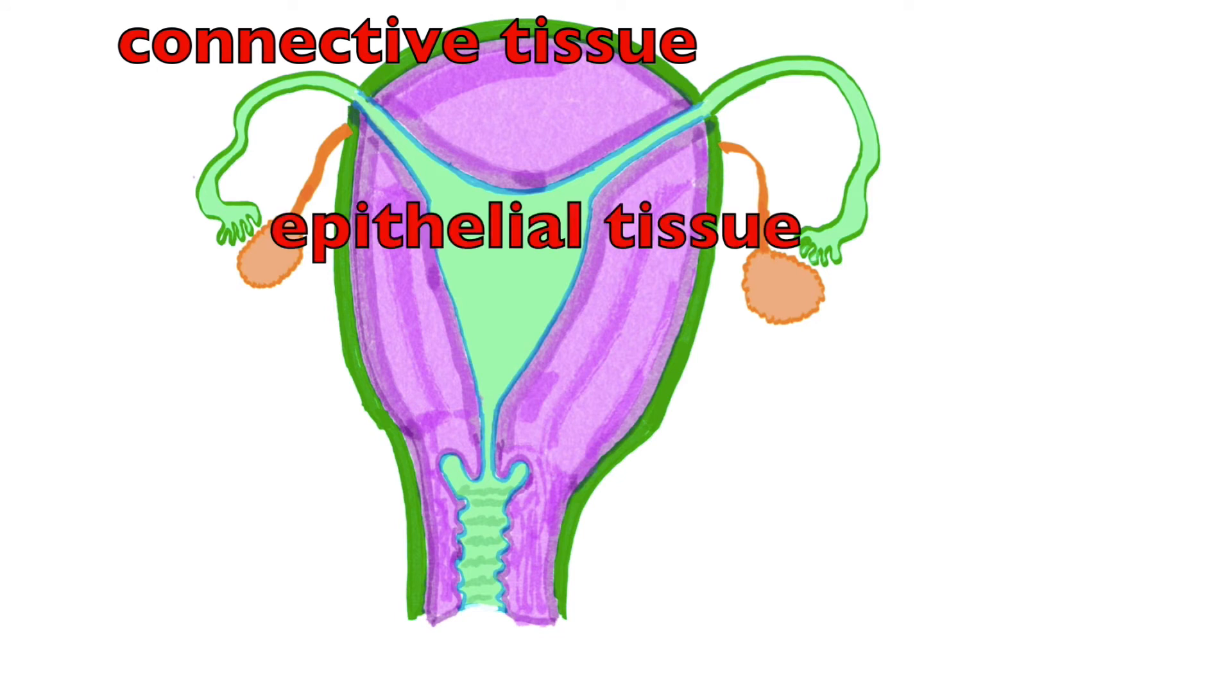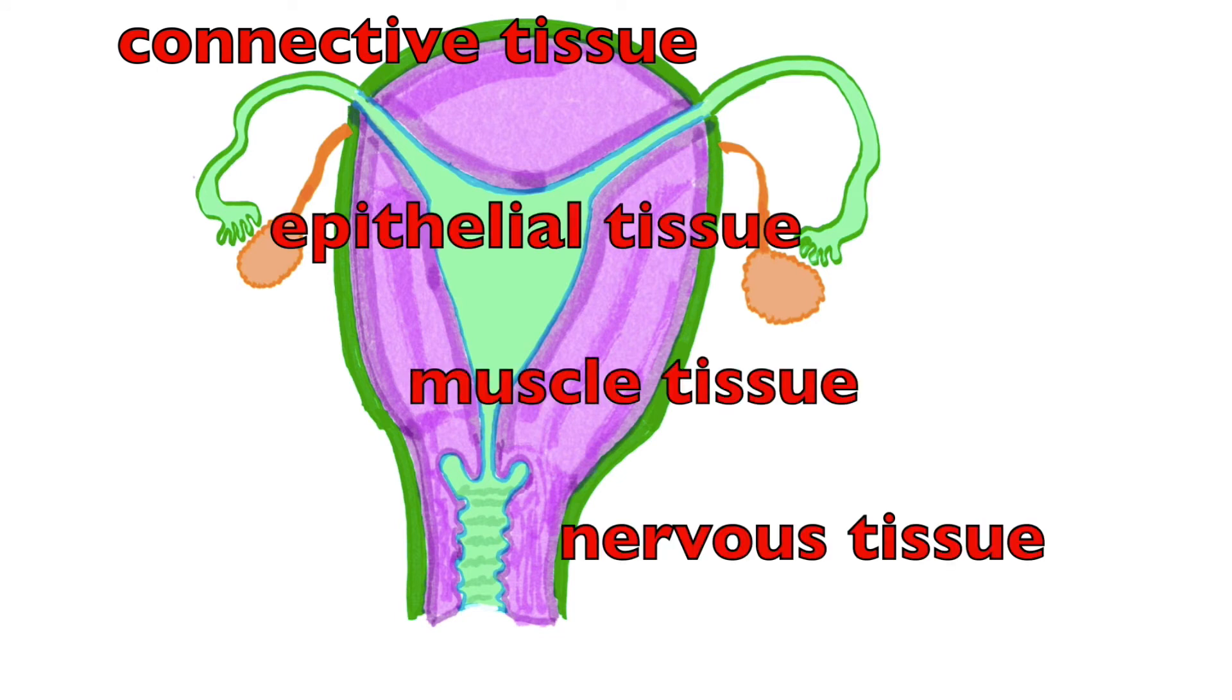I tend to say them in that order just so it starts ringing and resonating with you and helps you remember those four tissue types: connective tissue, epithelial tissue, muscle tissue, and nervous tissue. In the uterus here, I've already described three of those tissue types. There are only four tissue types in the body.